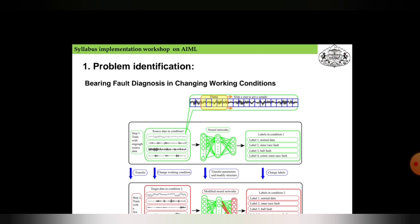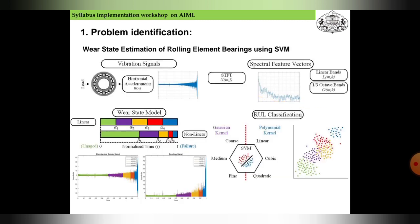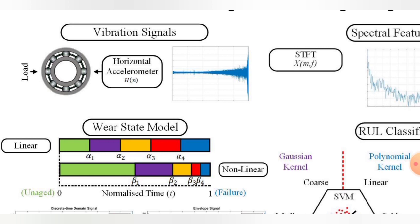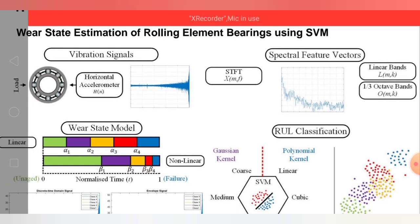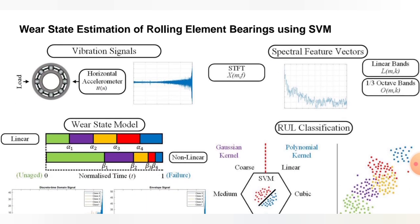Coming to the next problem identification: the wear state estimation of the rolling element bearing using SVM. Here we can see vibration signals in the bearing given with the help of the load and the horizontal accelerometer is attached. STFT is also attached, and this is the general wear estimation of the rolling element bearing shown here.